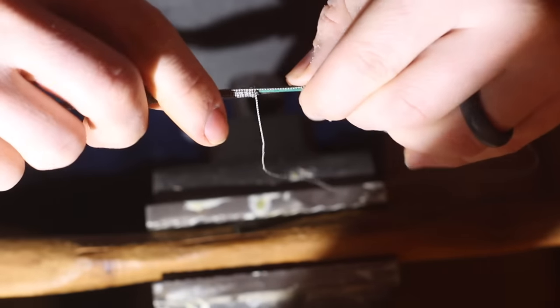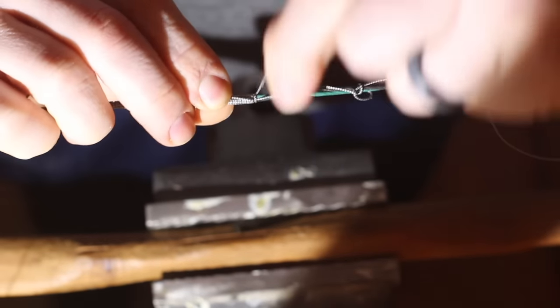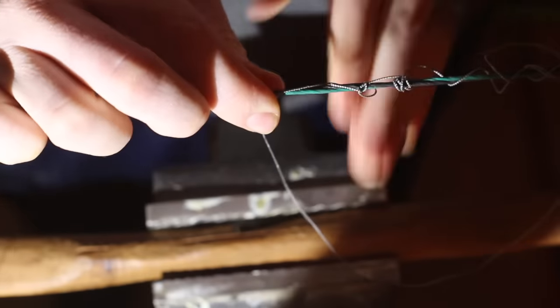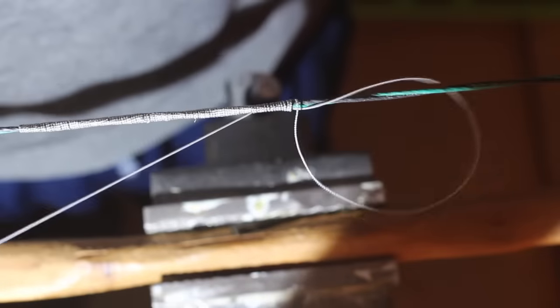Then as you continue to serve the string it's going to unwind the string you just passed through the loop and it's going to become a knotless knot.